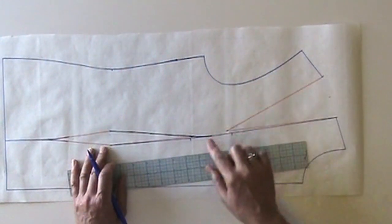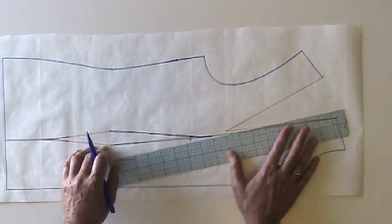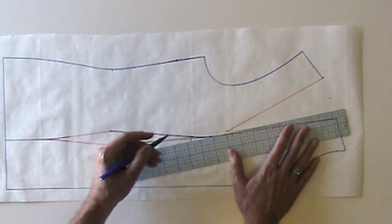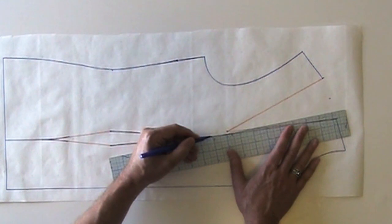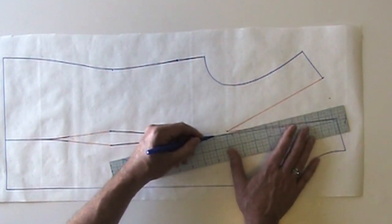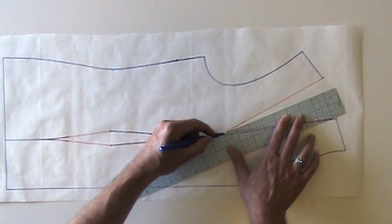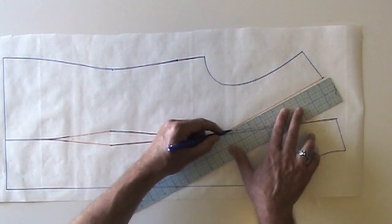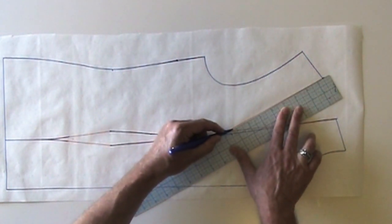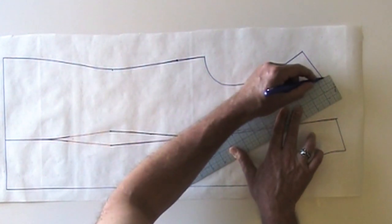And now from the apex to the shoulder, I'm going to start it right on the apex point and I'm going to gradually curve. I'm going to do a little bit of a curve until I meet the shoulder point and draw my line.